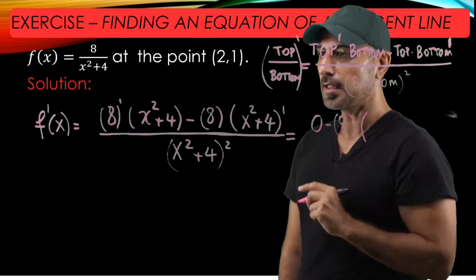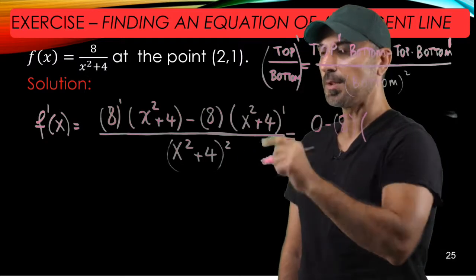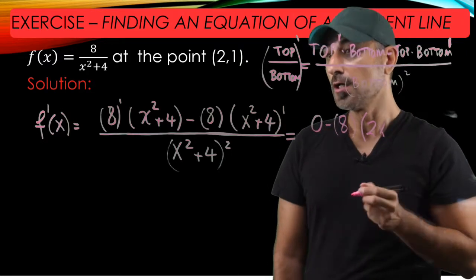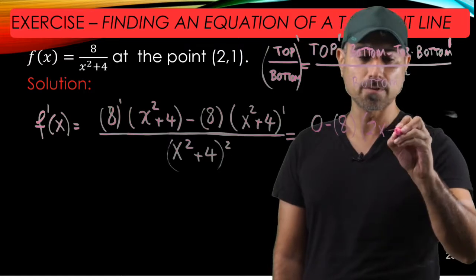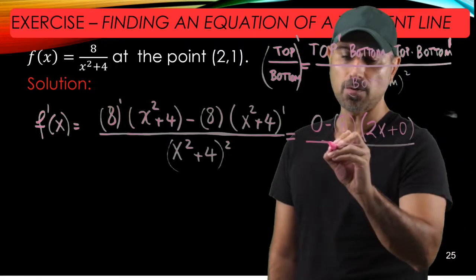So let's first find the derivative of x squared, and that's the power rule, so 2 times x to the power of 1, which is 2x. And the derivative of 4, which is a constant, is 0. This is all divided by x squared plus 4 quantity squared.